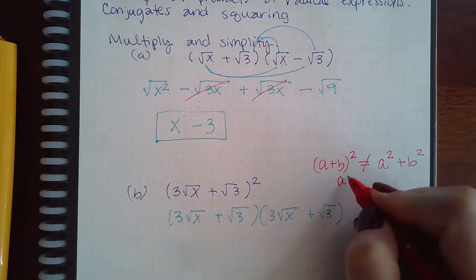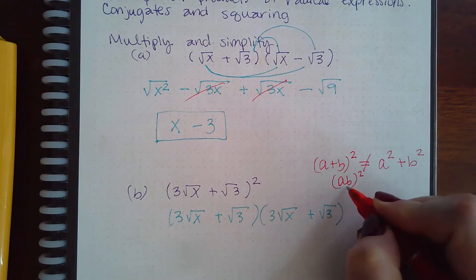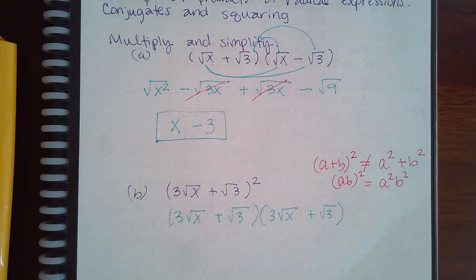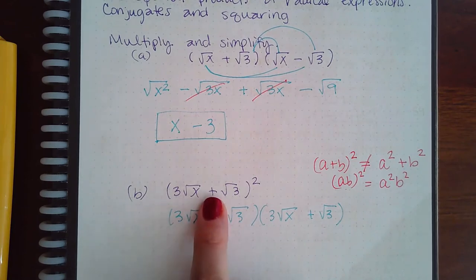The only thing that we have is for a product. If they're multiplied together, then we can square each one individually. These are not multiplied together. This one is though.